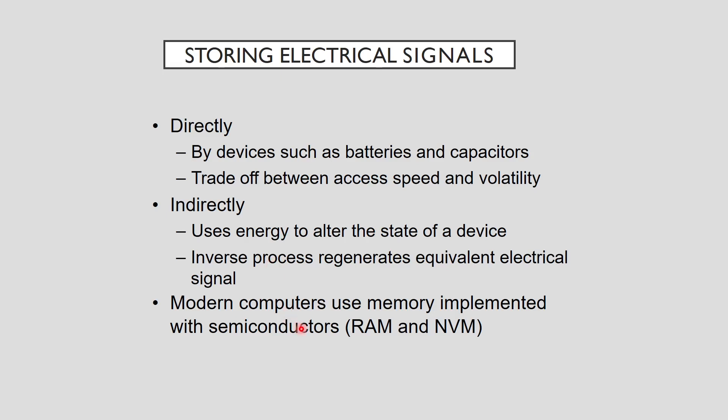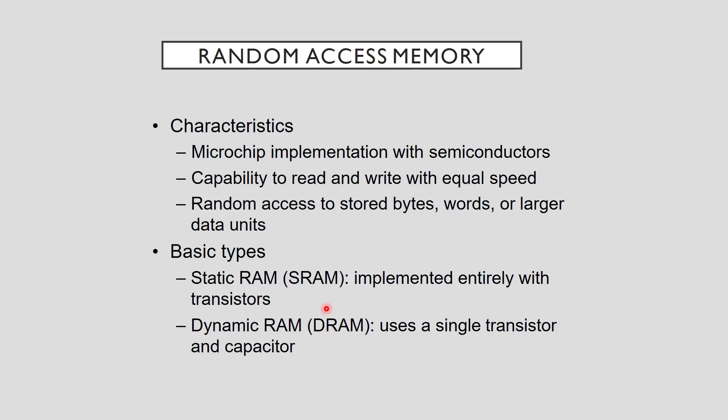Early computers implemented primary storage as rings of ferrous material — iron and iron compounds — called core memory. These rings or cores are embedded in a two-dimensional mesh of wires, where electricity sent through the wires induces a magnetic charge in one metallic ring. Random access memory (RAM) is a generic term describing primary storage devices with the following characteristics: a microchip with conductor capability, equal read and write speed, and random access to stored bytes, words, or larger data units.